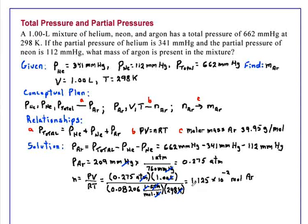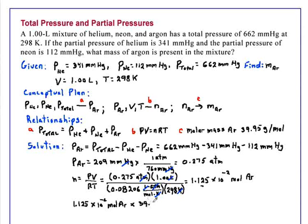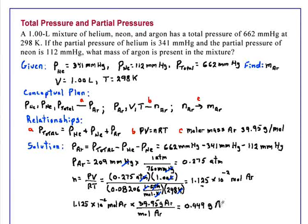Our data restricts us to 3 significant digits, so we underscore the 2 to remind us. We will now use the molar mass of argon to convert moles to grams. Taking 1.125 × 10⁻² moles of argon and multiplying by 39.95 grams of argon per mole of argon gives us 0.449 grams of argon in the mixture.